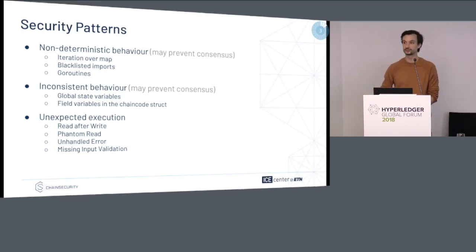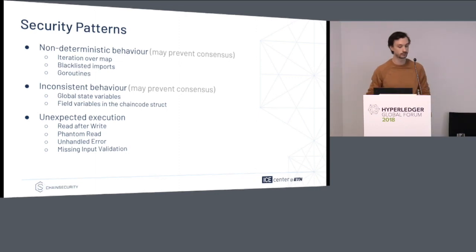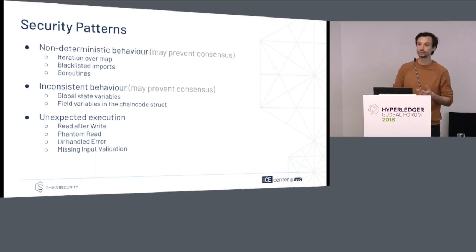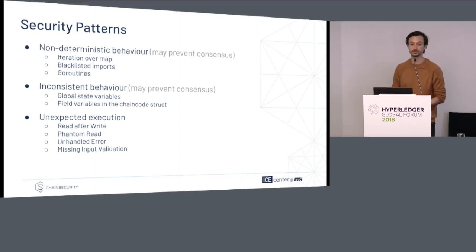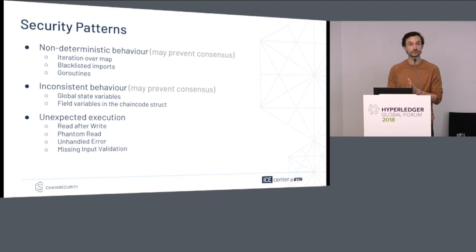We identified nine patterns. I will describe one in more detail later on to give you an idea of what is actually being worked on. Five of these patterns are responsible for preventing consensus, and four of them are more about unexpected execution that might lead to buggy code.